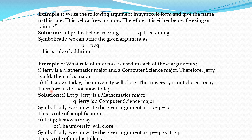Next: 'If it snows today, the university will close. The university is not closed today. Therefore, it did not snow today.' Let P = it snows today, Q = the university will close. In symbolic form: P → Q is the first premise, ¬Q (not closed) is the second premise, and the conclusion is ¬P (did not snow). So the argument is P → Q, ¬Q ⊢ ¬P. The rule used here is Modus Tollens, also known as the Law of Contrapositive.